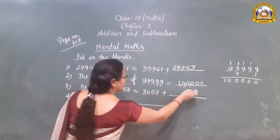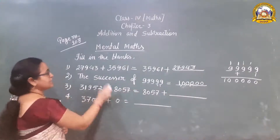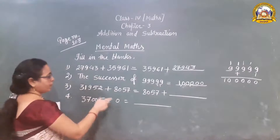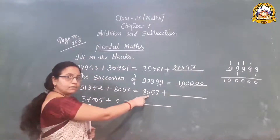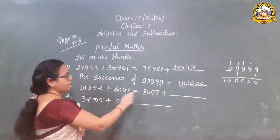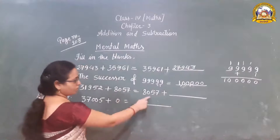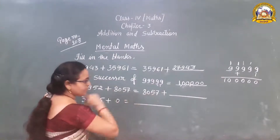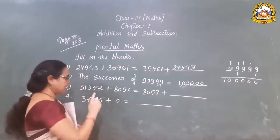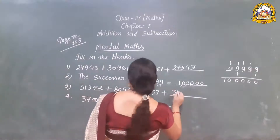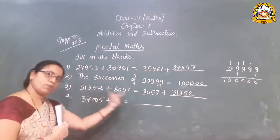Next question: this number plus this number, just like the first question. On one side, two numbers are there; on the other side, only one number. Which number is missing? See carefully — this number is also present here, but one number is absent there. So we write that number here: 31952. Now both sides are balanced.